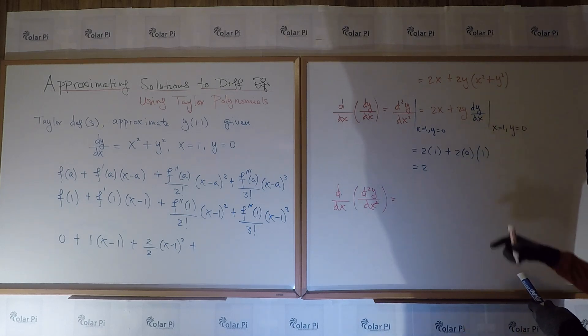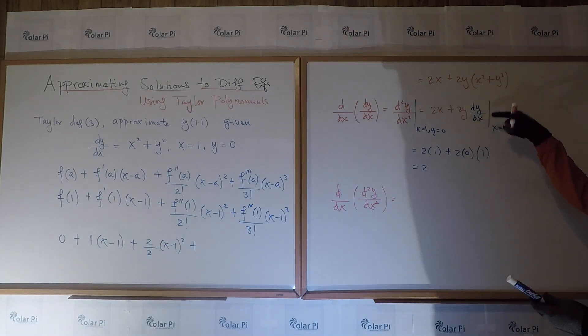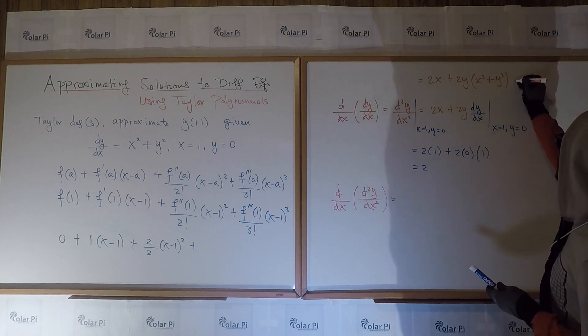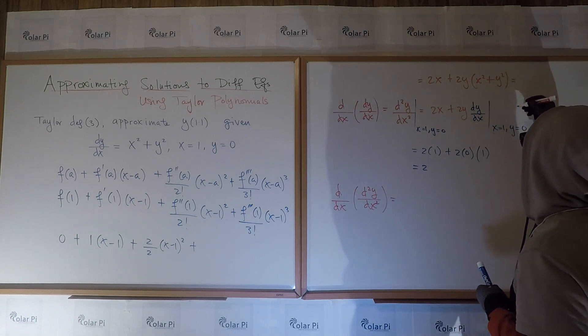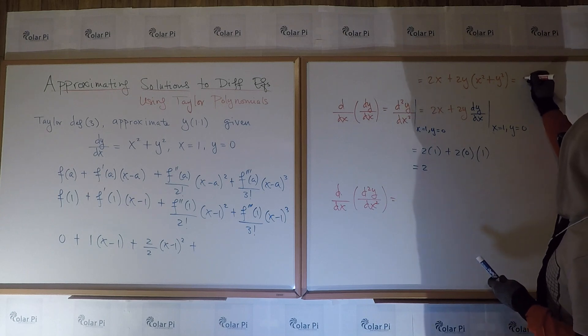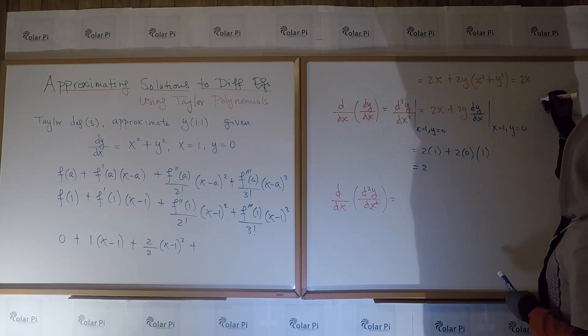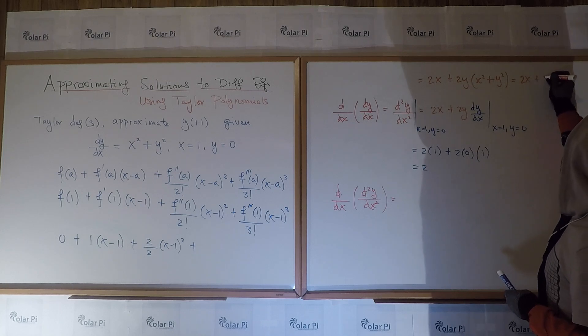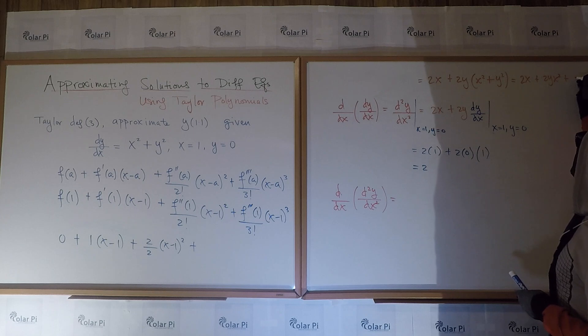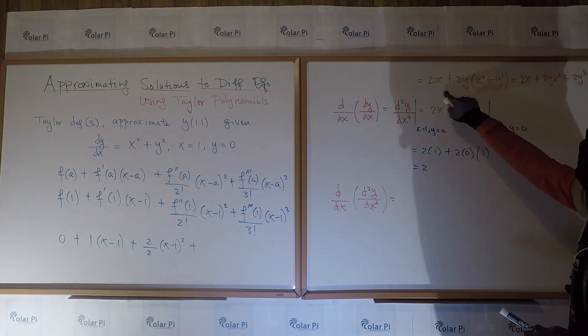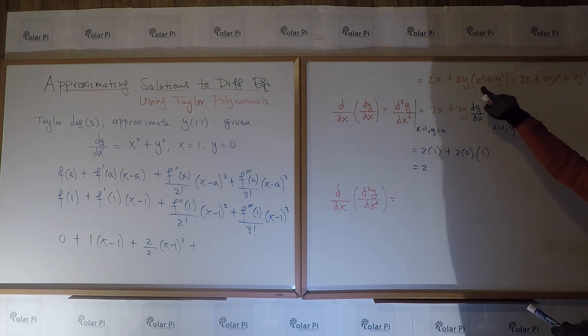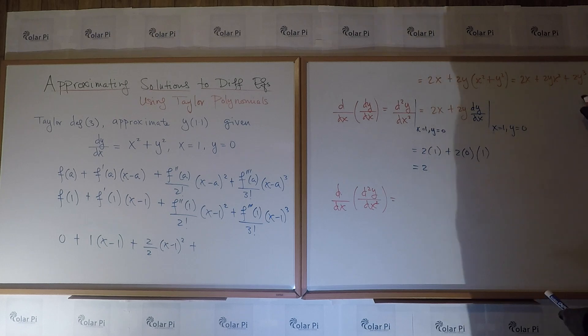plus 2 times y is 0. Good, and dy/dx at x equals 1, y equals 0 is 1, but who cares? We're multiplying it by 0, so we get 2. So that means that f''(1) is 2. So we have plus 2 over 2 factorial, so 2 over 2 times x minus 1 squared, and then plus f'''(1) is next. And so that's gonna be d/dx, the derivative of the second derivative this time, d²y/dx².